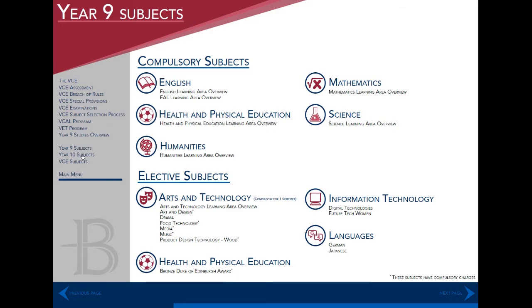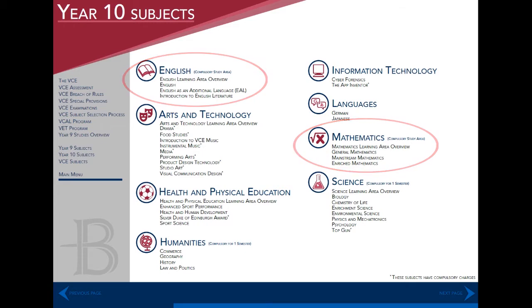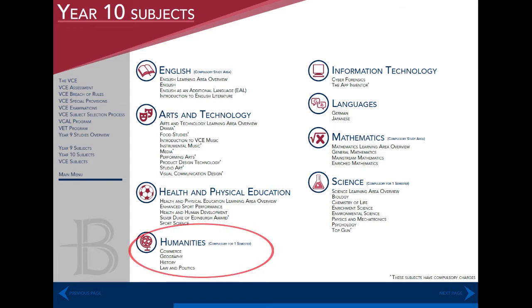At year 10, students must study English and mathematics for the whole year and are then able to choose electives to fill up the rest of their timetable. Note that across the year, students must study at least one humanities and one science elective.